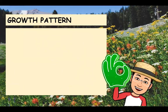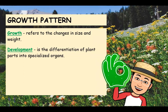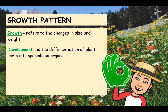Now we're going to tackle the growth pattern of plants. A mature plant is a product of a series of changes from seed germination through the growth of a seedling to maturity. Growth in plants refers to changes in size and weight, while the differentiation of plant parts into specialized organs is referred to as development.